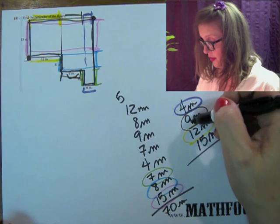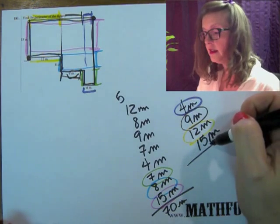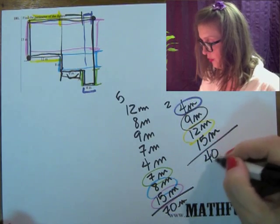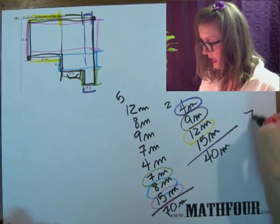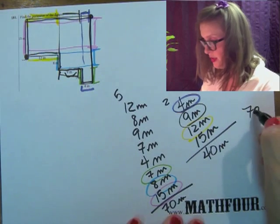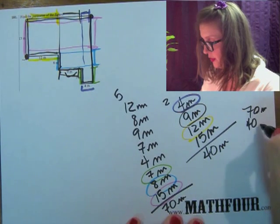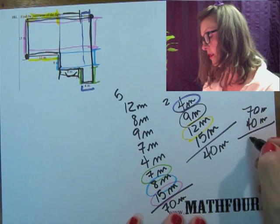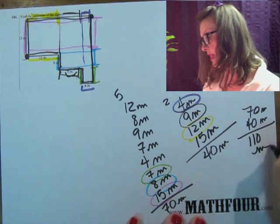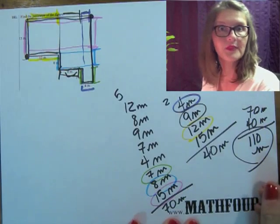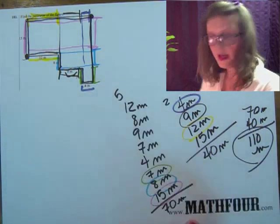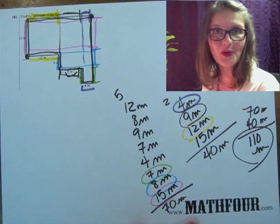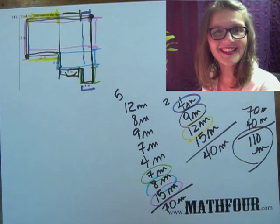4, 13, 15, 20, 2, 3, 4. 40 meters there. And then I have to add the 70 meters plus the 40 meters to give 7, 8, 9, 10, 11. 110 meters is my perimeter of this crazy figure. I'm Bon Crowder with Math4.com reminding you that math is not a four-letter word.